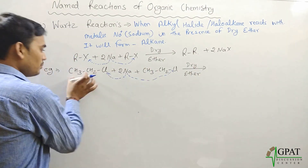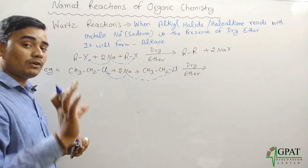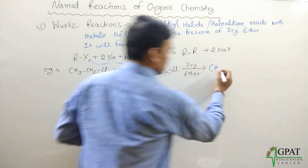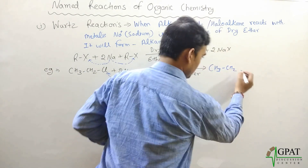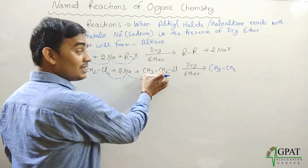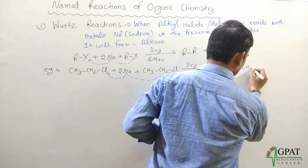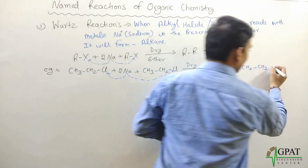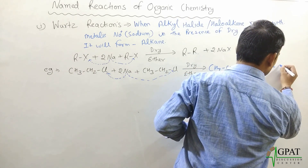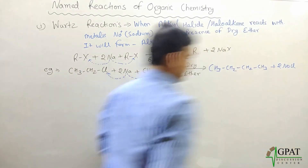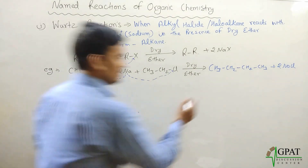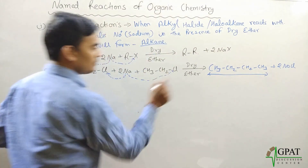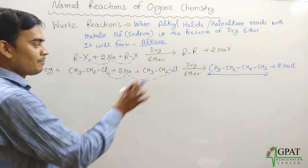These sodium chloride ions form and both alkyl groups get attached, forming an alkane. The first alkyl compound is C2H5 and the second is C2H5, so together they form butane (C4H10), and the other product is sodium chloride.